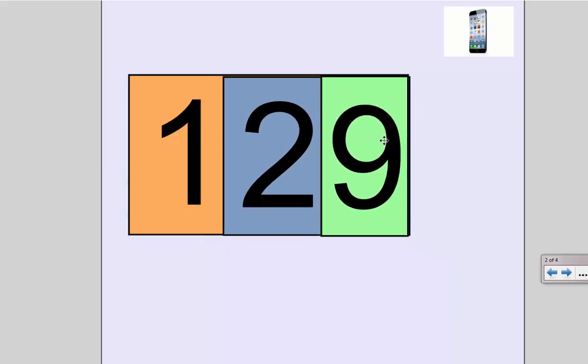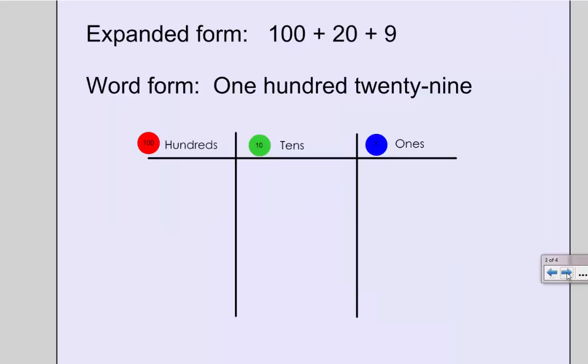So in expanded form we have one 100 plus two tens plus nine ones, and we write that as 129. In place value discs I'm gonna want to show nine ones.